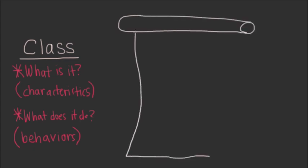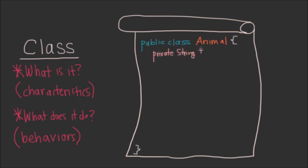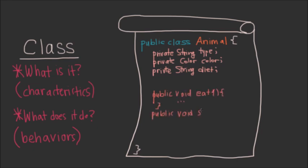For example, if we wanted to create a data type called animal, we would define not only its characteristics, but also its behaviors. In Java, we call the characteristics instance variables and behaviors instance methods. So for this animal class, for its instance variables, we could have things like type, color, and diet. And for its instance methods, we could have things like eating, sleep, and poop, because that's what animals do, right?